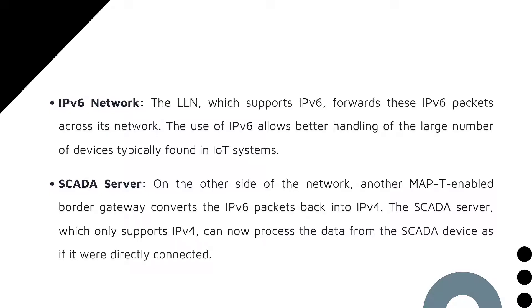When we reach the destination, there is a MAP-T-enabled border gateway. They convert the IPv6 packets back to IPv4. Then the SCADA server, which supports IPv4, receives the data.